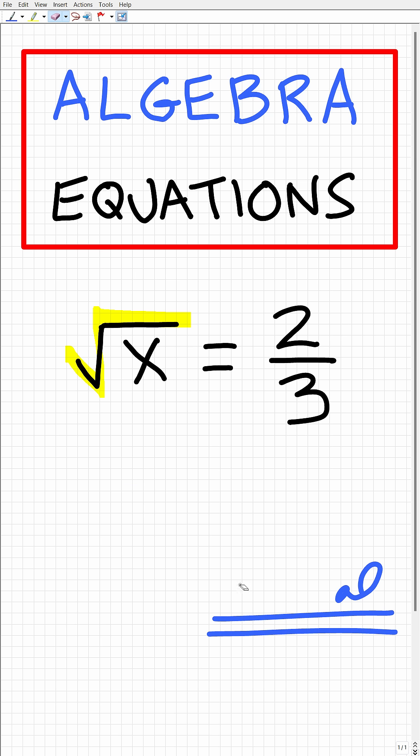So let's talk about how to solve this equation for x. Now remember x in algebra is a variable and it simply represents a number. So the square root of some number is equal to the fraction two thirds.